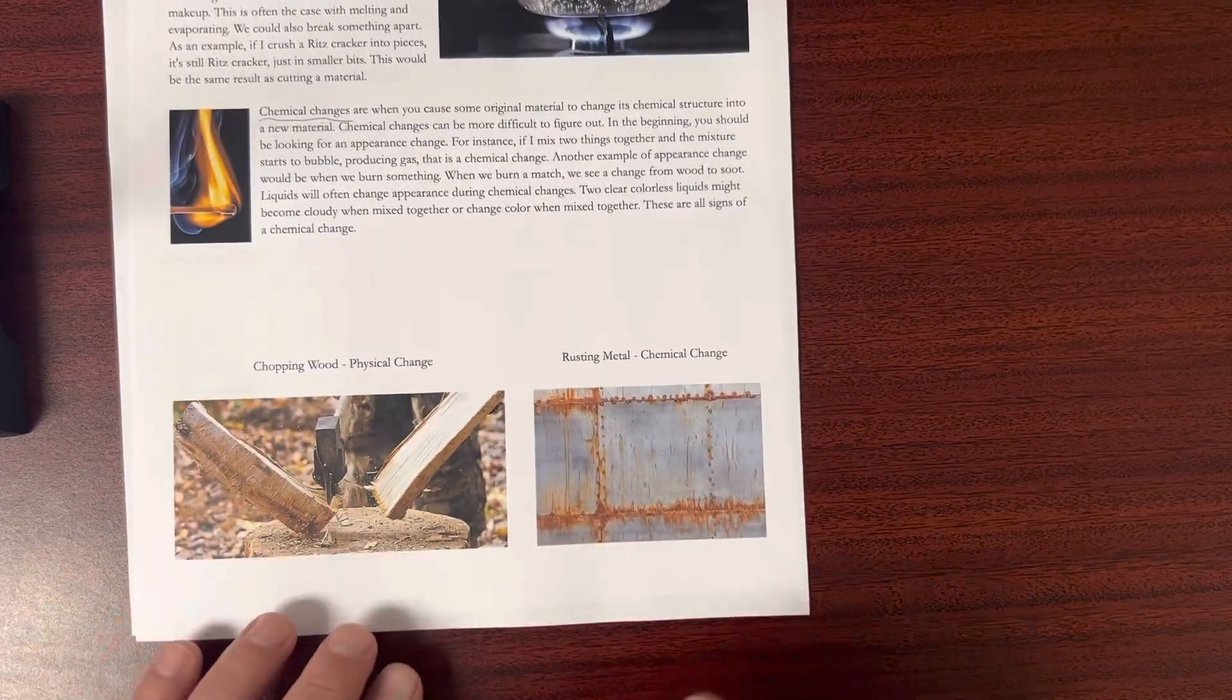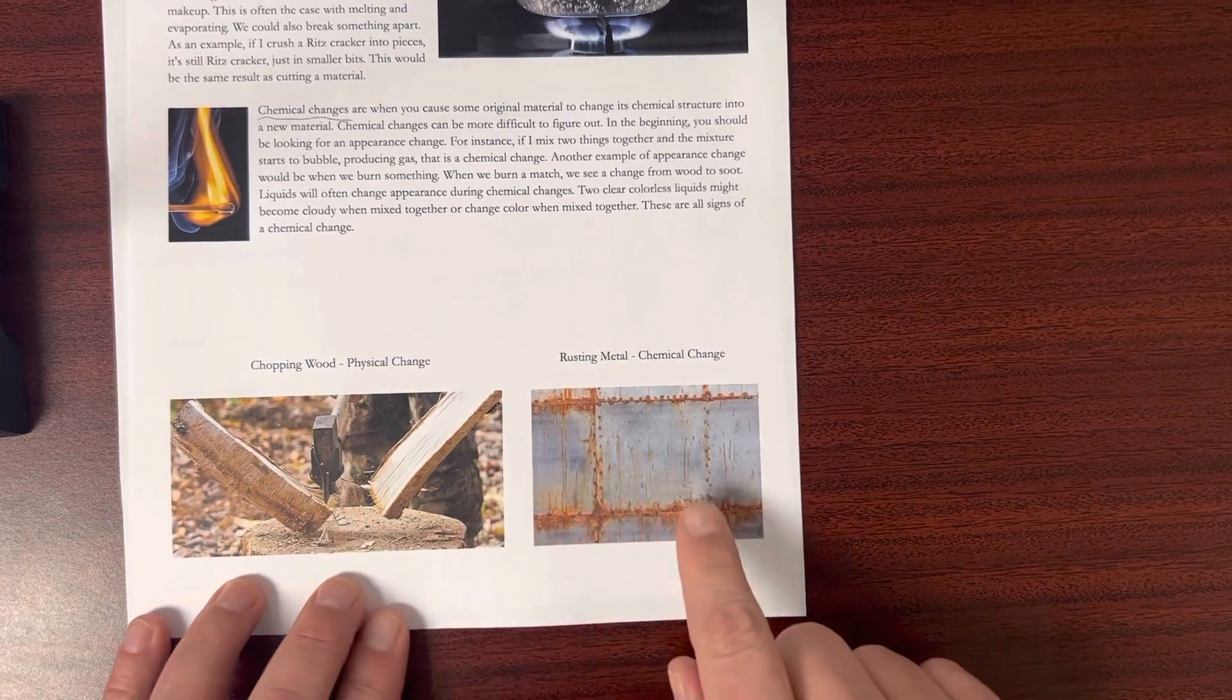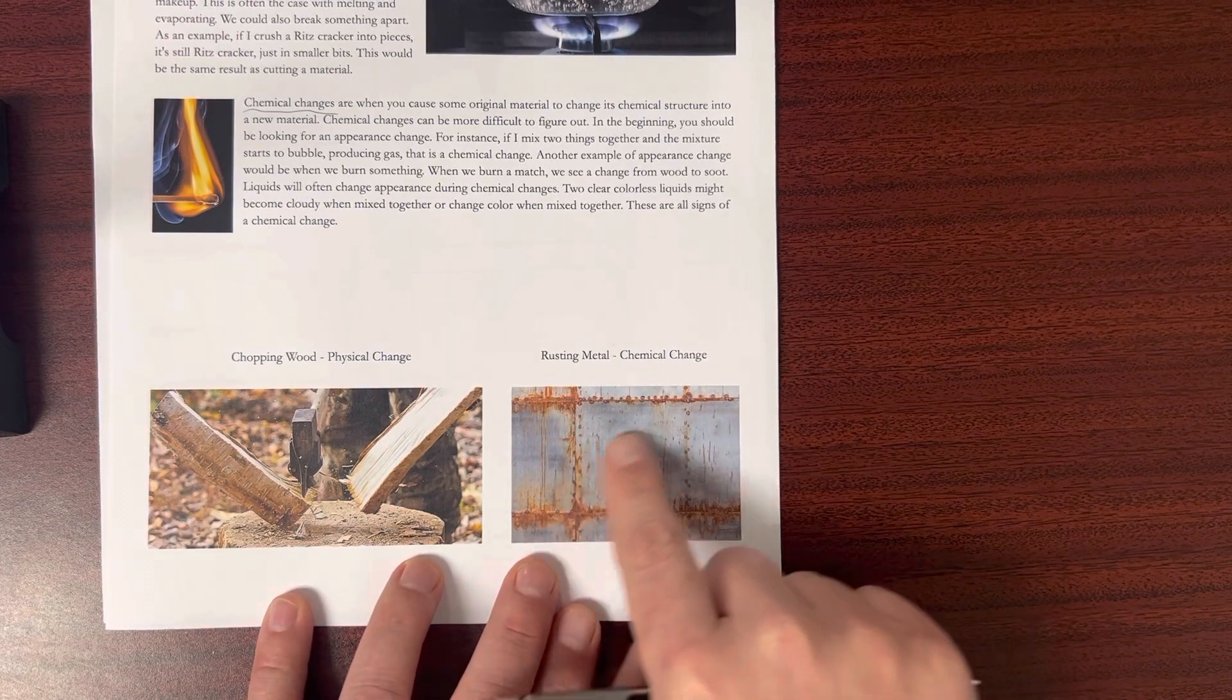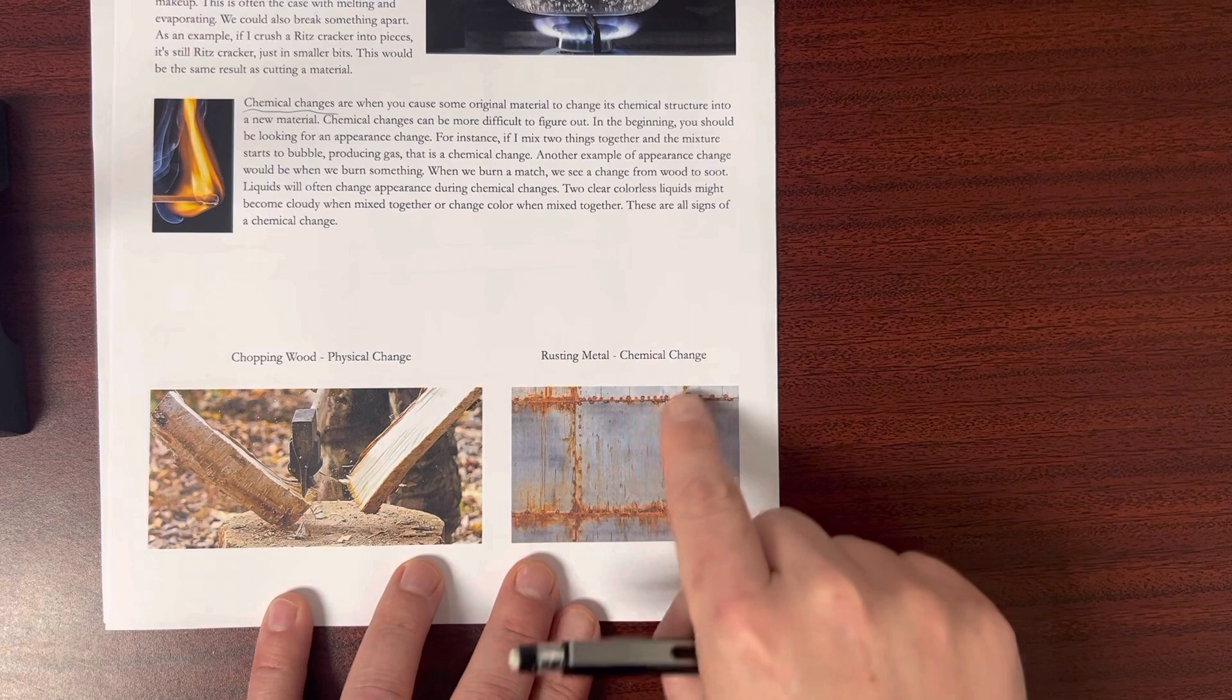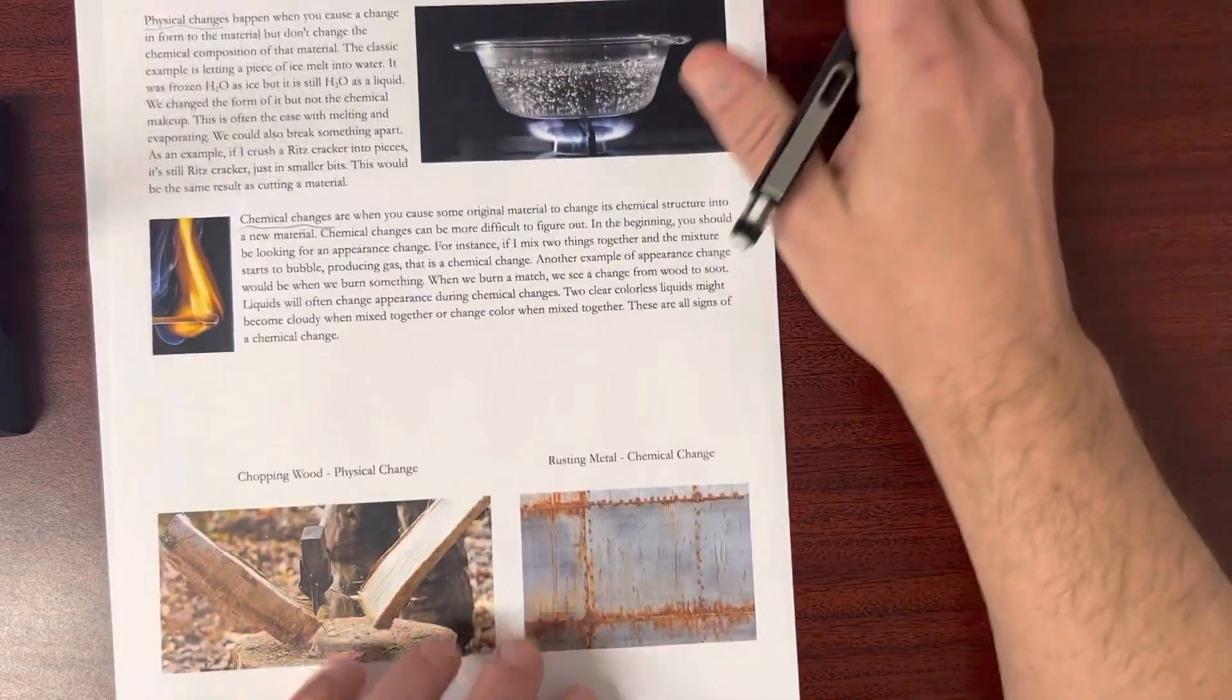And then it gives a couple more examples down here at the bottom where we had the chopping wood was the physical. But if I have metal that starts to rust, that's going through some oxidation process, that is a chemical change. It is now chemically different after the process has taken place.